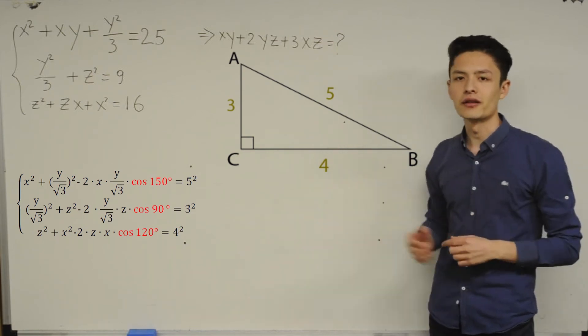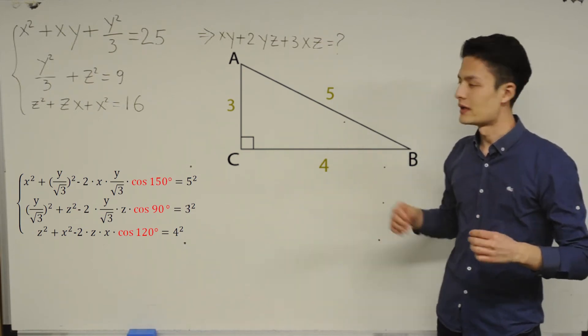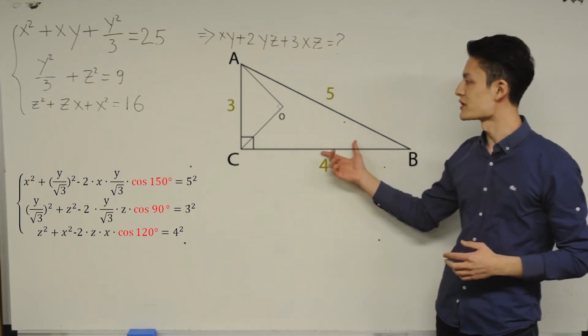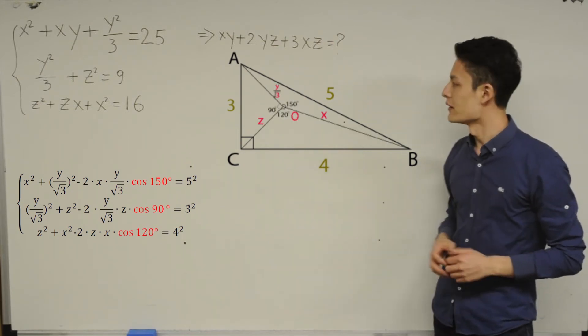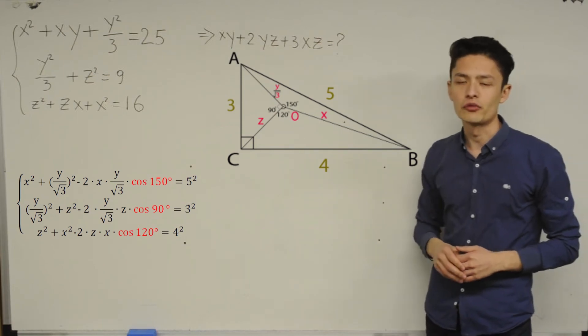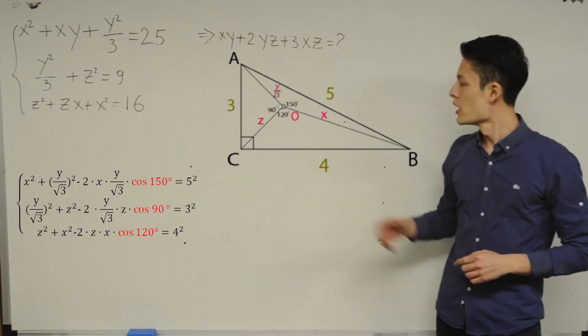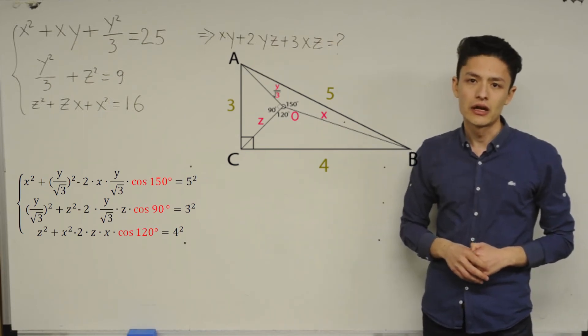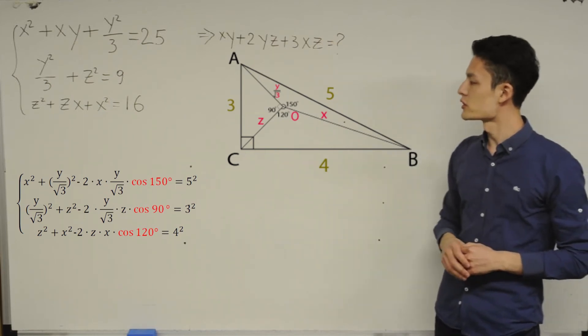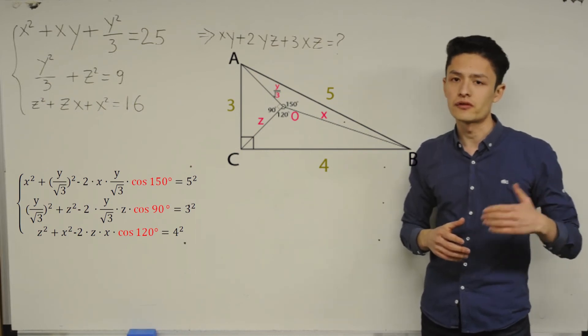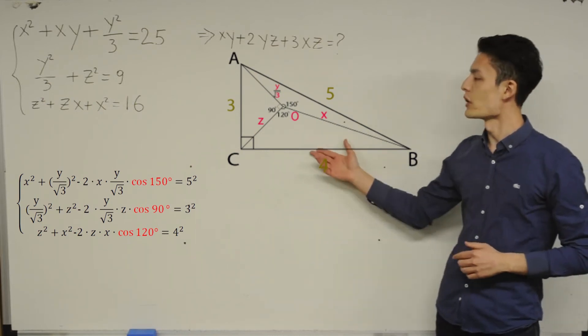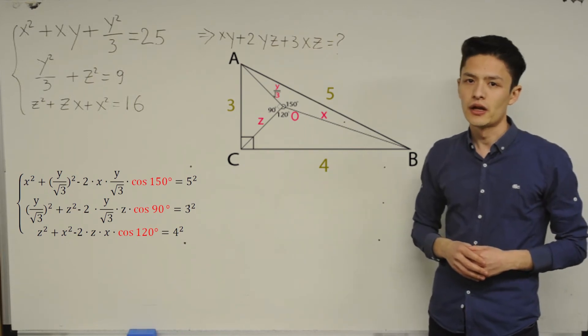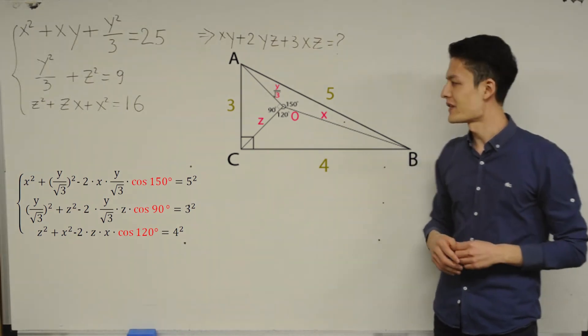And now, right in this triangle, I'm going to draw a point named O, which satisfies these conditions. The angle AOB is equal to 90. And the angle AOC is equal to 150. And now, the angle BOC is equal to 120. Now, I say AO is equal to Y divided by root 3. And BO is equal to X. And lastly, CO is equal to Z.